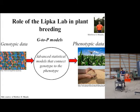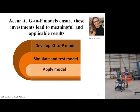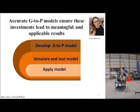What that means is we use advanced statistical approaches to connect the genotype to the phenotype. So in greater detail, here's a slide produced by another one of my graduate students, Sarah Weidner. We have the capability of ensuring that our investments into those high-throughput genotyping and phenotypic technologies are going to give meaningful results. In the typical analysis in our lab, we will try out a G-to-P model, run simulations, test them on real data from crops, and then apply the model.